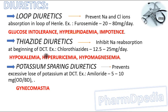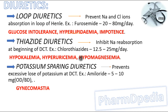Thiazide diuretics are medium-efficacy diuretics; they inhibit sodium reabsorption at the beginning of the distal convoluted tubule. Example: chlorothiazide, 12.5 to 25 mg per day. Adverse reactions include hypokalemia, hyponatremia, and hypomagnesemia.